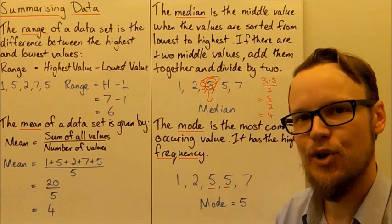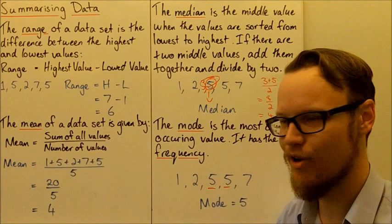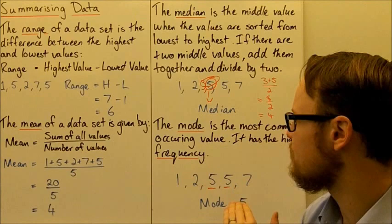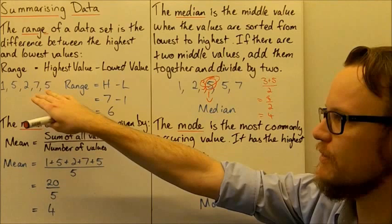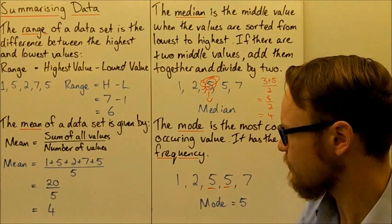The last average we're going to look at is called the mode. Mode means the most common — in French, 'à la mode' means in the style of, in the fashion. So it's the most fashionable score because it's the one that occurs most often. The mode is the most commonly occurring value — the one with the highest frequency. For our original data set — 1, 5, 2, 7, 5 — the number 5 occurs twice, whereas 1, 2 and 7 only occur once. So the mode for this data set is 5.